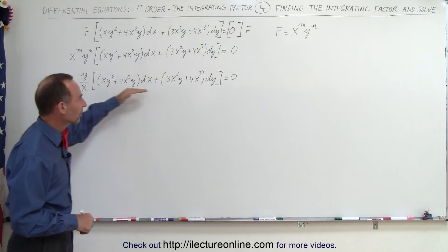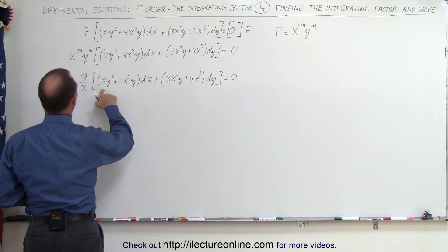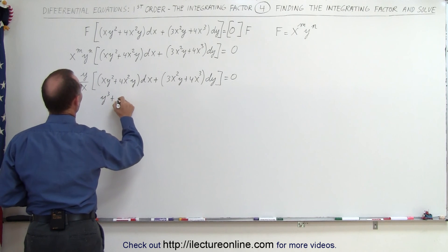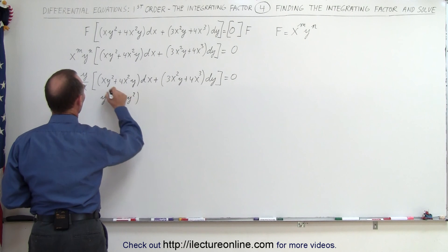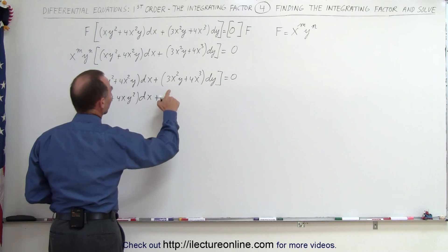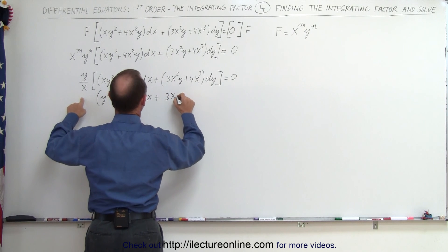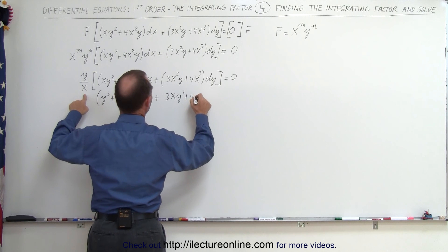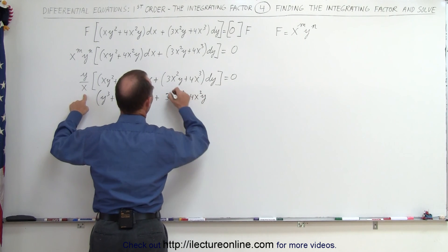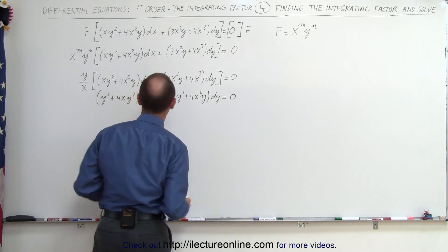We're going to multiply both sides of the equation by the integrating factor. When we do that, we get the following equation — the x cancels out and we get: (y³ + 4xy²) dx plus (3xy² + 4x²y) dy equals 0.